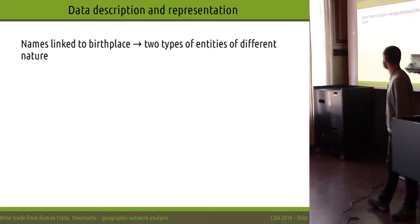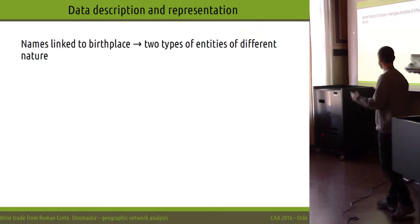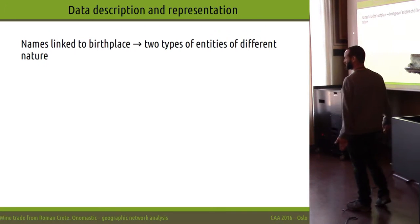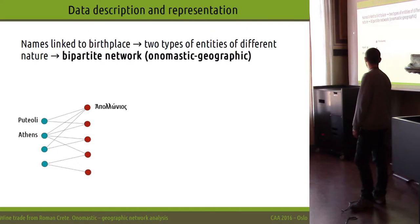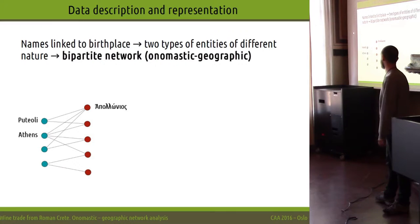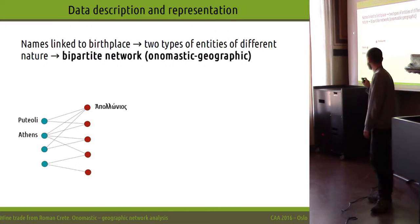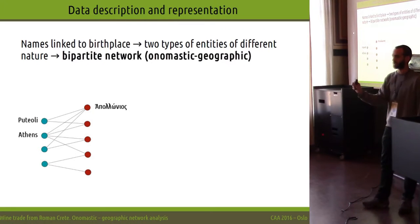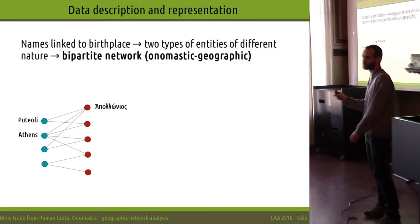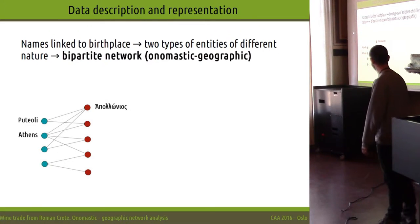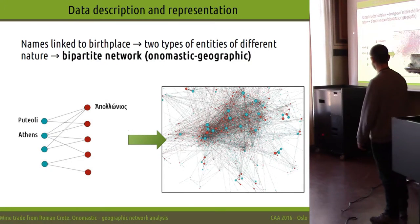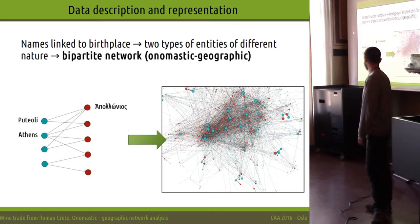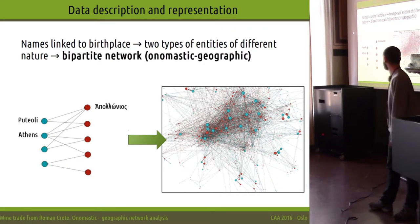There are two entities here, and we bring in these two-mode networks, or bipartite networks. This becomes an automatic geographic pipeline network. We can link a name to a place every time an origin is mentioned in the database, and in the end we have a huge network as we'll see later.